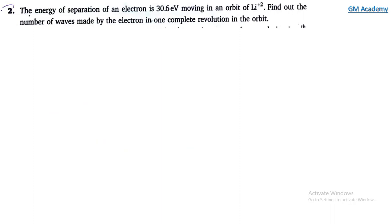Our second question: The energy of separation of an electron is 30.6 electron volt moving in an orbit of lithium 2+. Find out the number of waves made by the electron in one complete revolution in the orbit. Our energy expression for nth orbit will be 13.6 z² / n² electron volt.